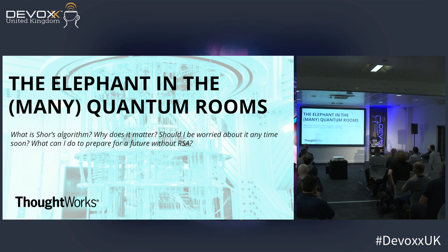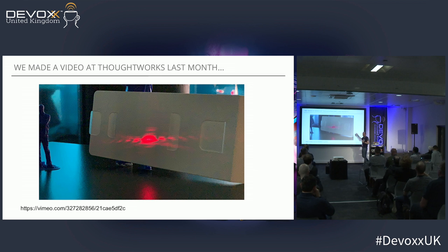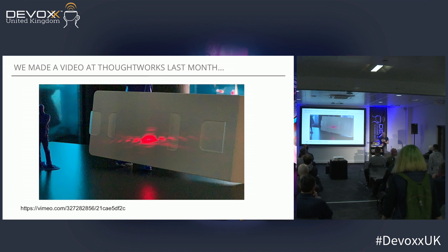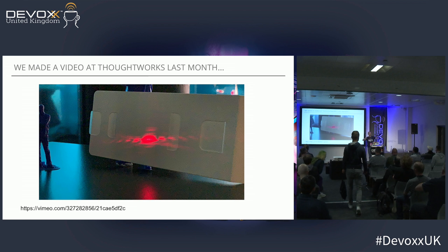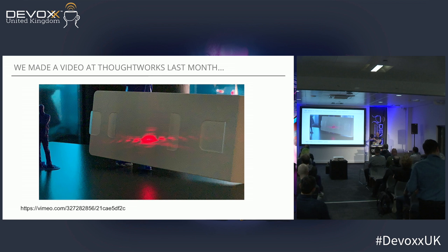Quantum computing — what's it all about? The reason I'm showing this is essentially that that experiment was originally devised by a man called Young back in 1809. He designed it as a way to demonstrate that light travelled in waves rather than as particles. Because light travels in waves, you get an interference pattern like you would get in standing waves in water.